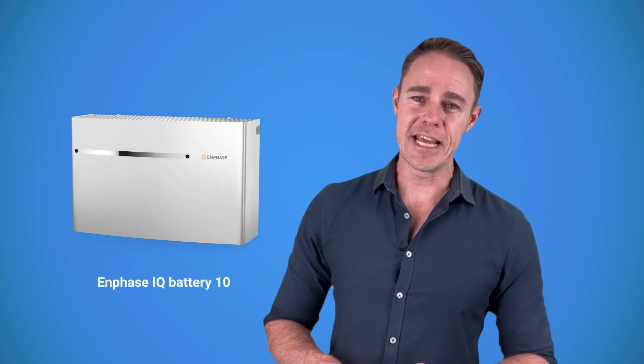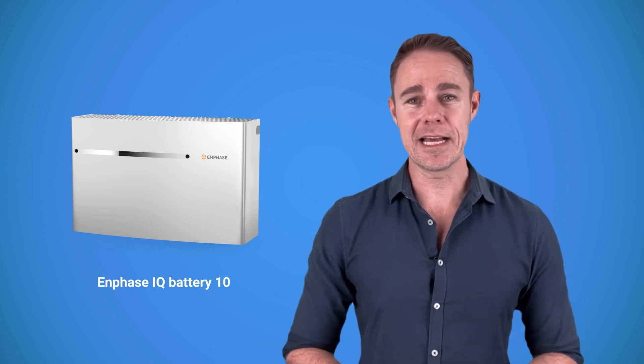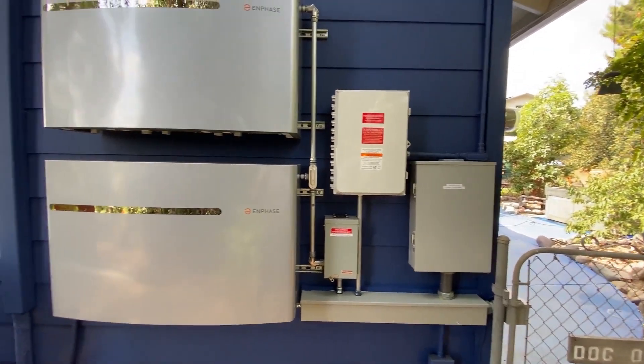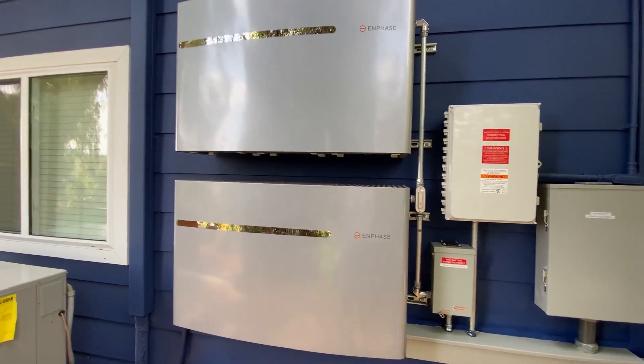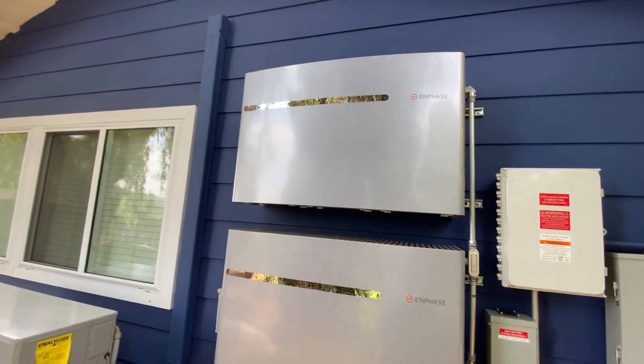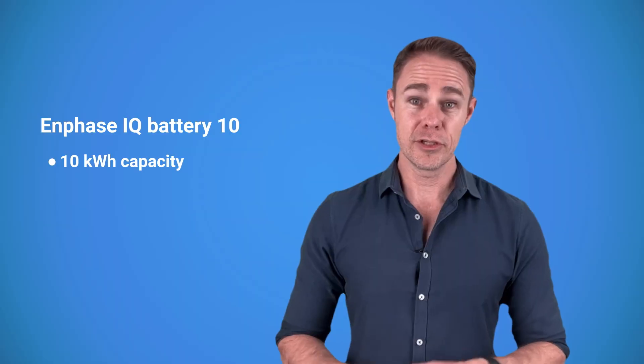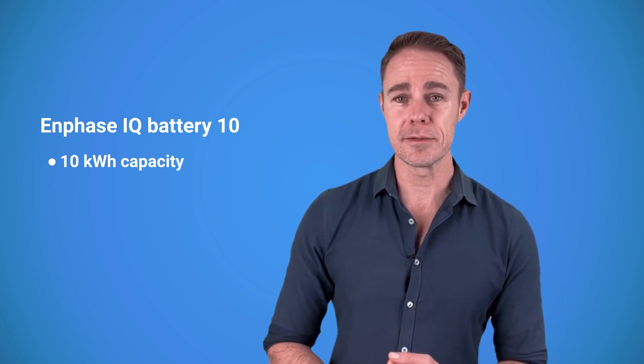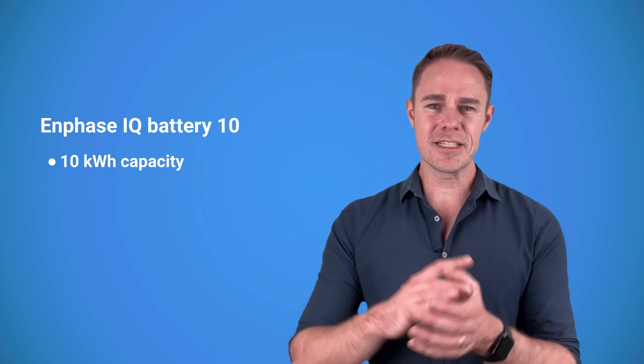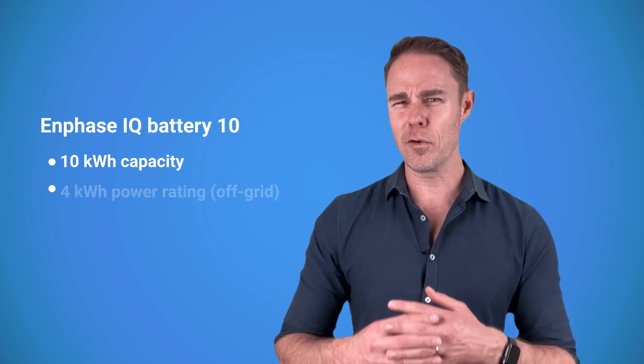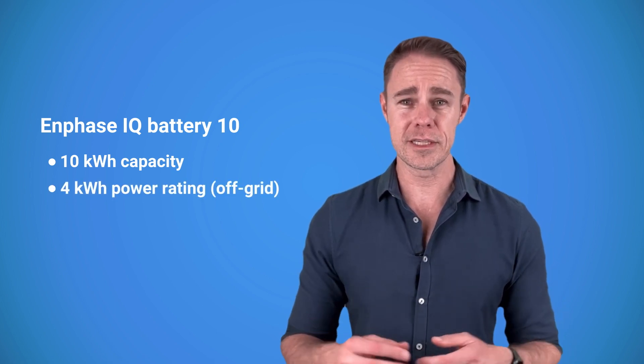Moving on. The next alternative I found was Enphase IQ Battery 10. It's an all-in-one AC coupled system. It consists of three base IQ battery 3 units and has a total usable energy capacity of 10 kilowatt hours. You can stack up to four IQ 10 units. 12 embedded microinverters together provide a little under 4 kilowatt power rating in an off-grid situation.